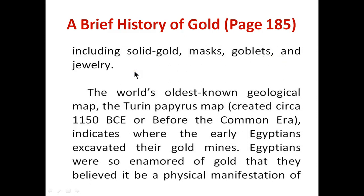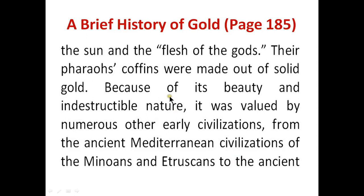On page number 185: The world's oldest known geological map, the Turin Papyrus Map, created circa 1150 BCE — or Before the Common Era — indicates where the early Egyptians excavated their gold mines. Egyptians were so enamored of gold that they believed it to be a physical manifestation of the sun and the flesh of the gods. Their pharaohs' coffins were made out of solid gold.